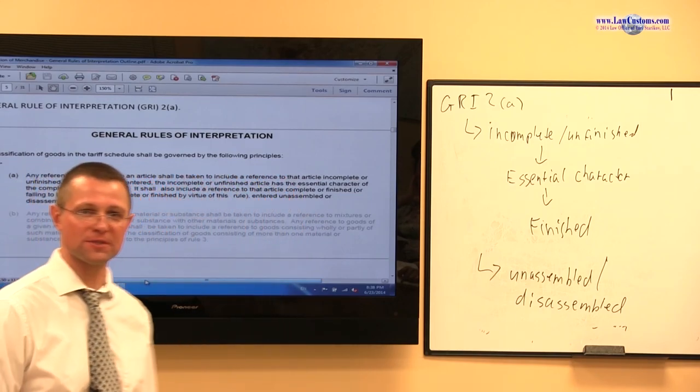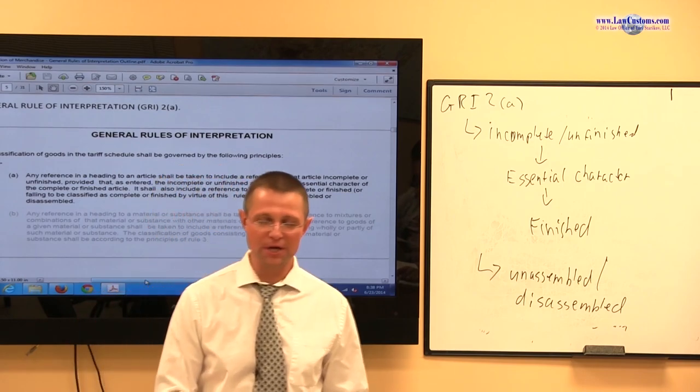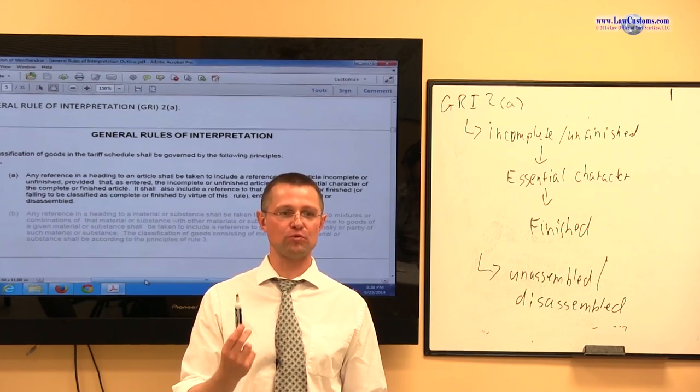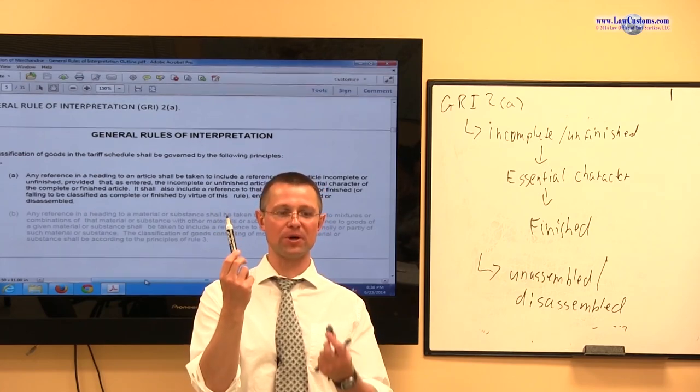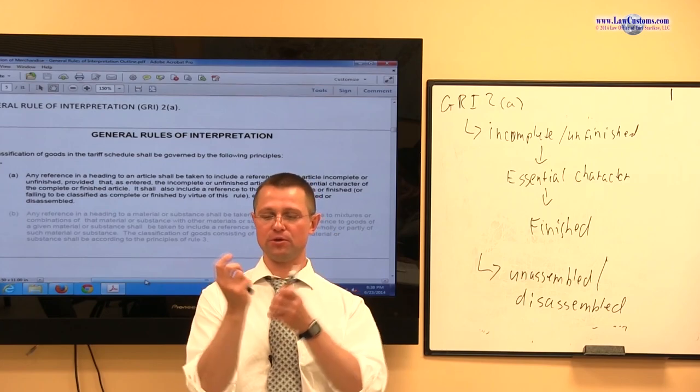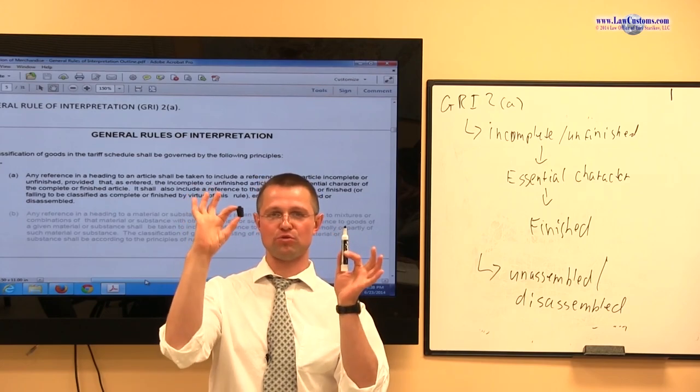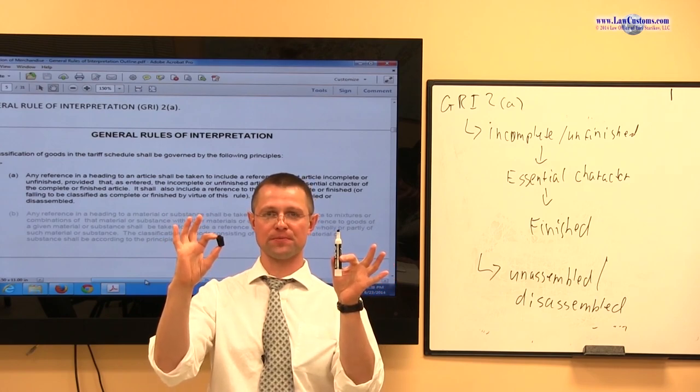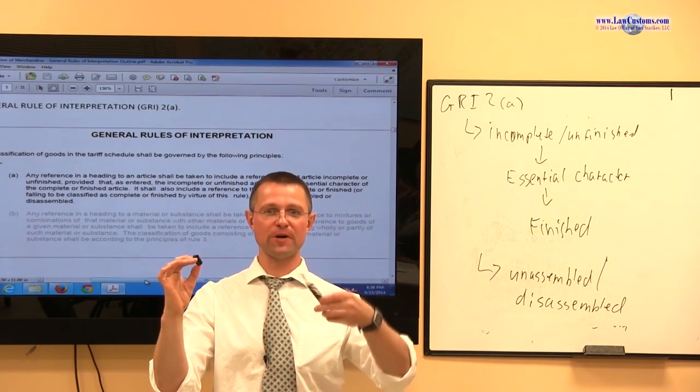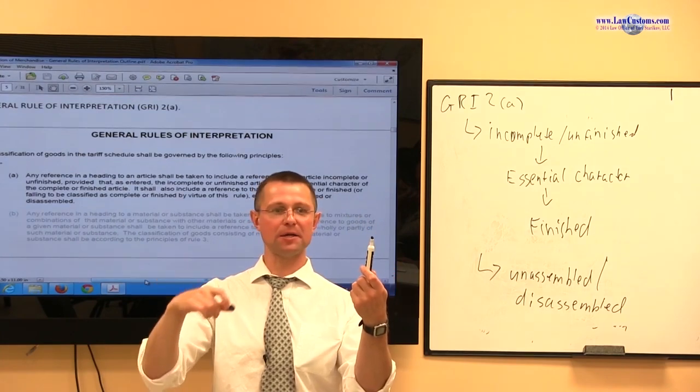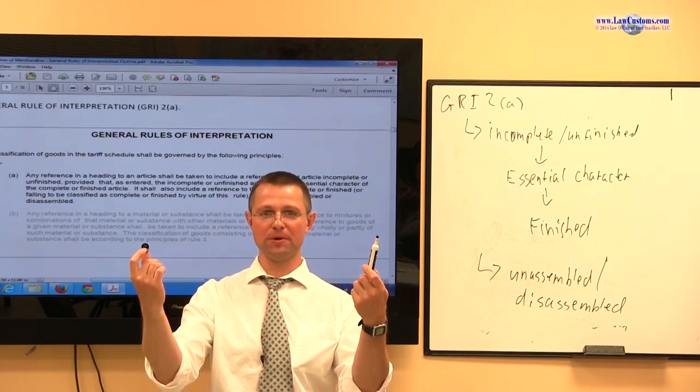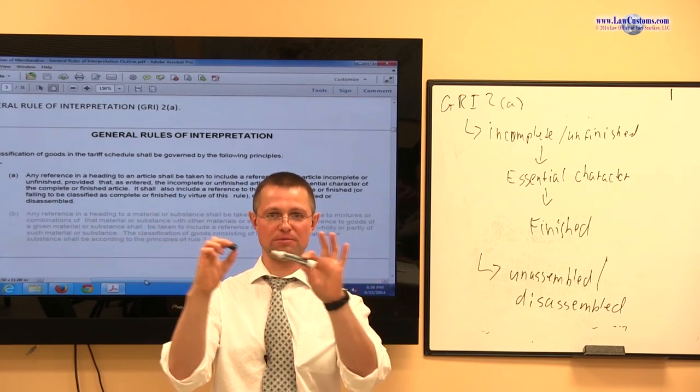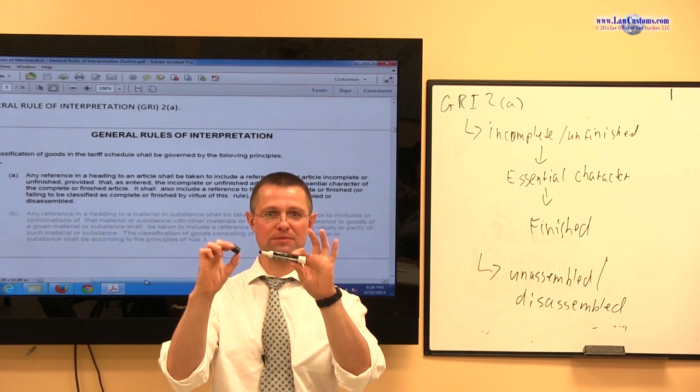Unassembled to disassembled, same thing. You have a shipment, a marker, comes in, in the shipment of two boxes. In one box, there is a marker. In another box, you have a plastic top. So, it all comes in on the same shipment. It is unassembled. Do you classify one as a marker and the other one as a plastic closure? Or you classify them as just a marker, one marker?